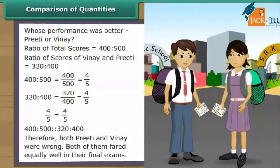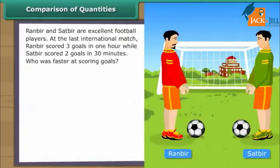Unitary Method. Runbeer and Satbir are excellent football players. At the last international match, Runbeer scored 3 goals in 60 minutes, while Satbir scored 2 goals in 30 minutes. Who was fast at scoring goals? Let us solve the question with the help of the unitary method.